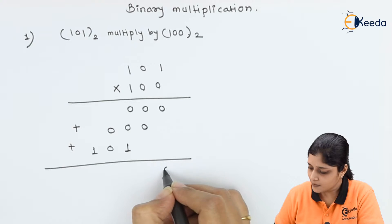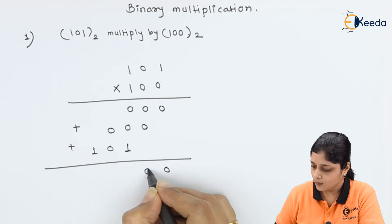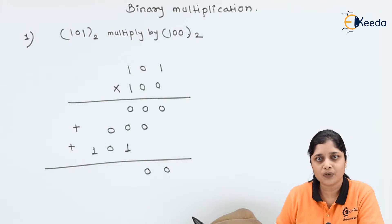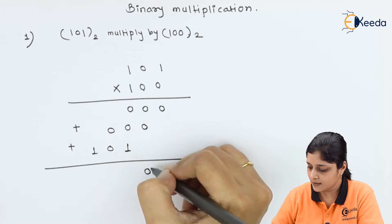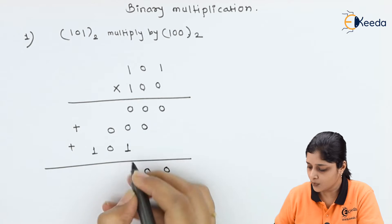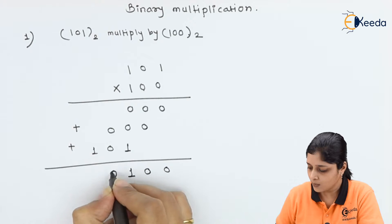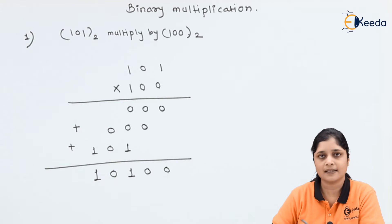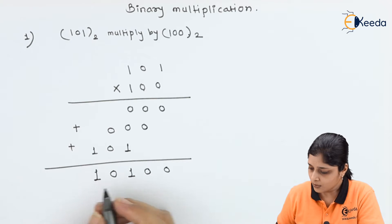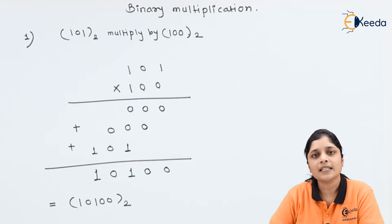Now the addition part: 0 as it is, 0 plus 0 is 0. Apply binary addition rules: 0 plus 0 is 0, 0 plus 0 is 0, 0 plus 1 is 1, again 0 plus 0 is 0, and finally 1 as it is. So the final answer is 10100 base 2.